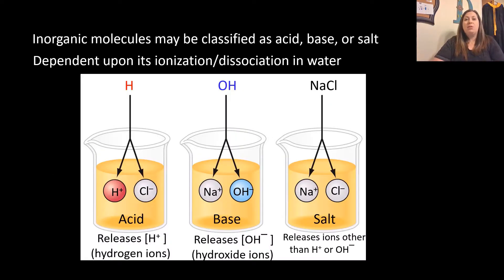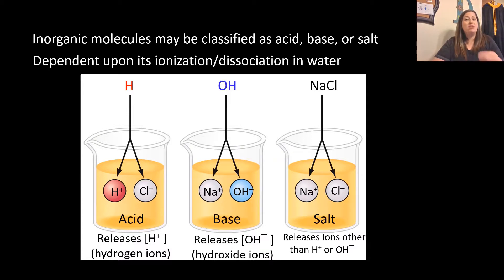Inorganic molecules can be classified as one of three things: acids, bases, or salts, depending on how they dissociate or break apart in water and what kind of ions they create. If they create positive hydrogen ions (H+), they are considered an acid. If they create negative hydroxide ions (OH-), they are considered a base. If they give off neither, producing some other ion, they are considered a salt.